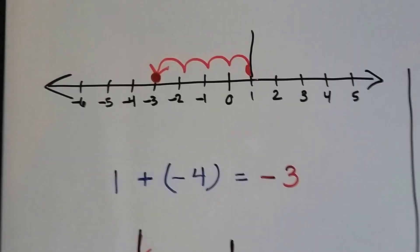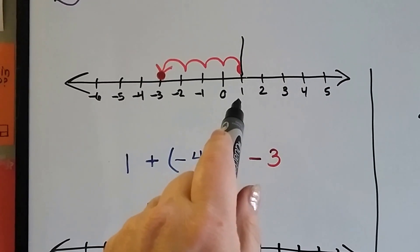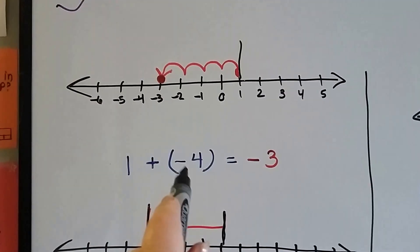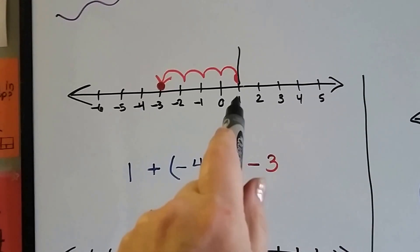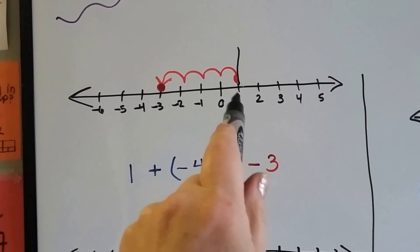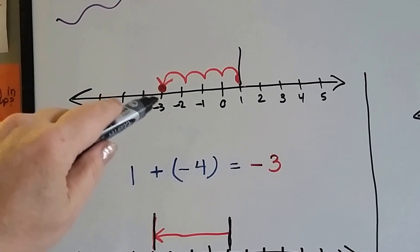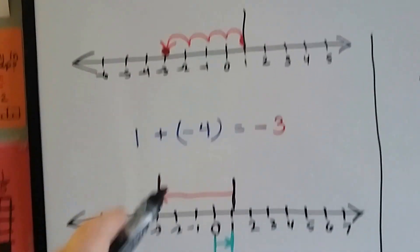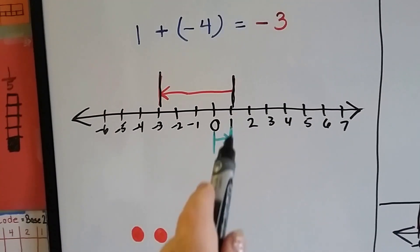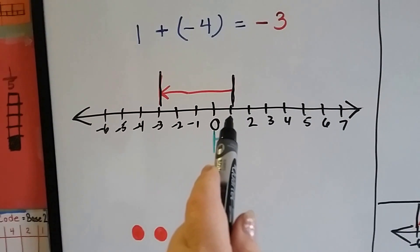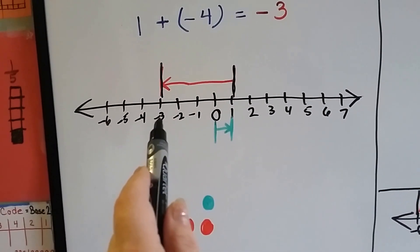If we have a positive 1 on the number line — we're on this side of zero — and we add a negative 4, we're going to end up with a negative 3. We're at positive 1 and we go 1, 2, 3, 4 to the negative, so we end up at negative 3. Because we're already on the positive side at 1, the negative 4 brings us back to negative 3.